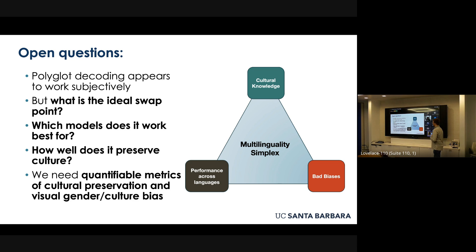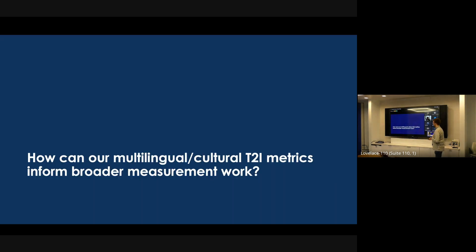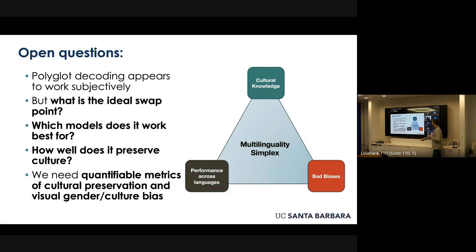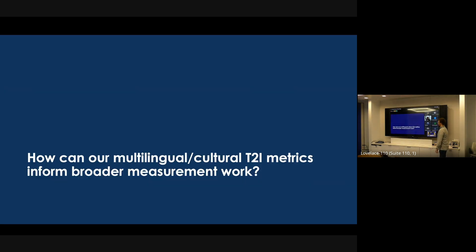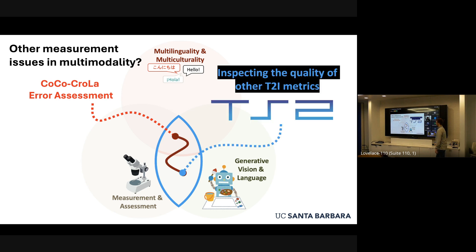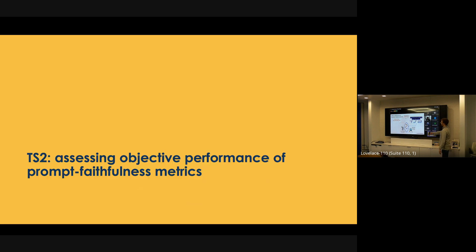This comes back to a measurement problem — all these things we're assessing are subjective. We don't really know what the ideal spots are to perform this swap from English to the target language, which models it works best for, or how well it's preserving cultural information. We're just going off vibes and subjective evaluations. So once again, I want to quantify this. This leads to new measurement problems and this project we called P2I score score, or T2I score score. We wanted to look at this class of measures called text-to-image prompt faithfulness measures.